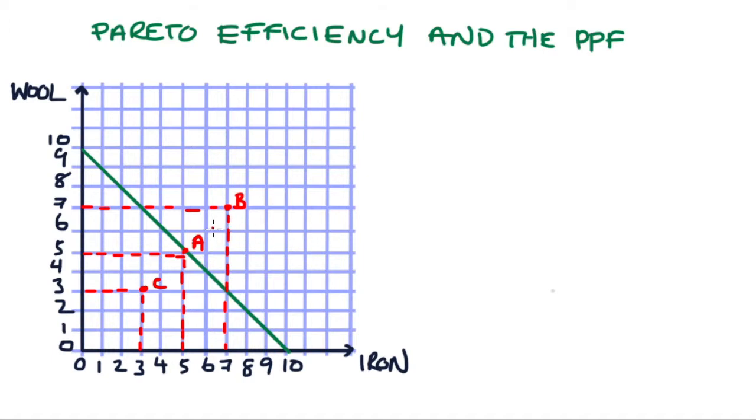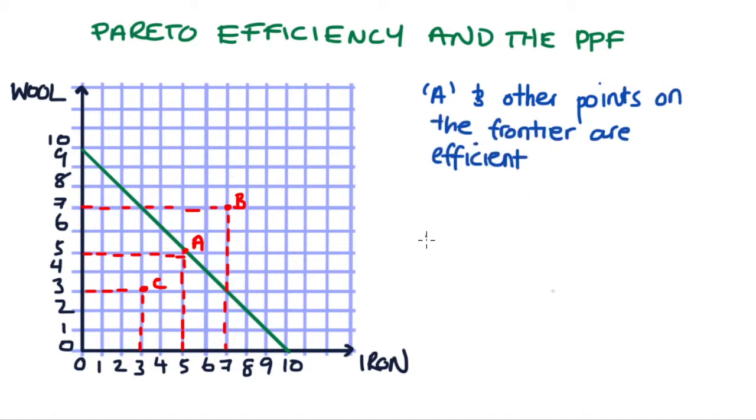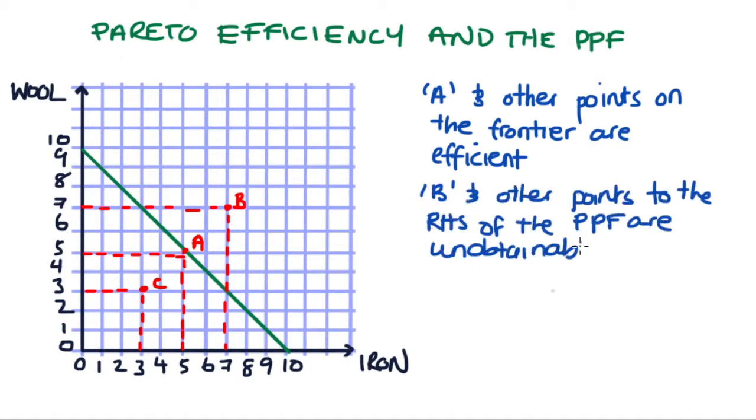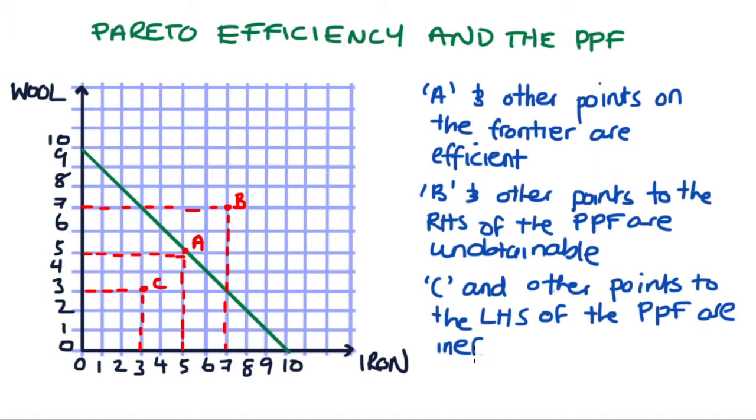Now you'll be told something like points A and points like it which lie on the curve are efficient, points B and other points like it which lie to the right hand side of the curve are unobtainable, and points C and other points like it which lie to the left of the PPF are inefficient.